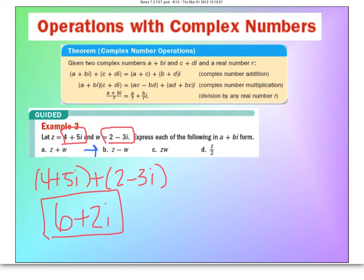So I'm going to take the letter z, which is 4 plus 5i, and I'm going to subtract from it the w, 2 minus 3i.